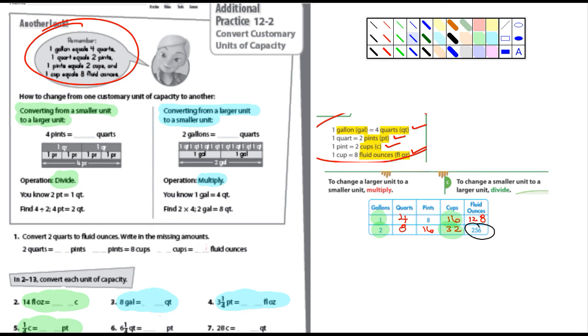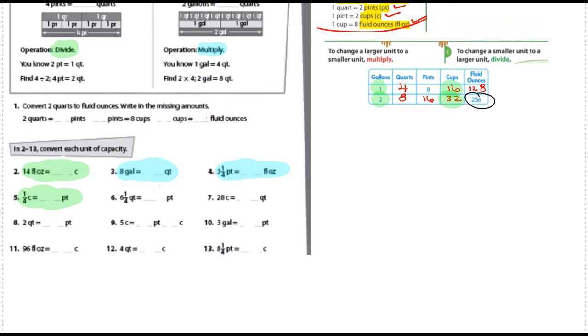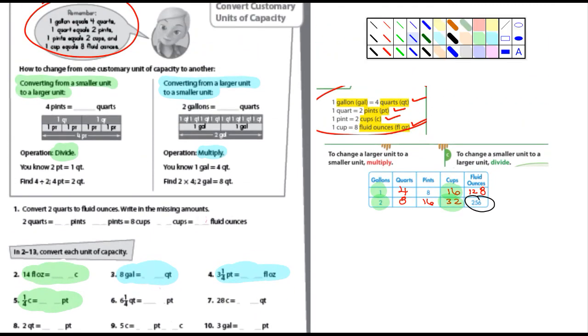So you're just going to have to get a blank piece of paper and number it, one through 13 looks like and solve those problems.